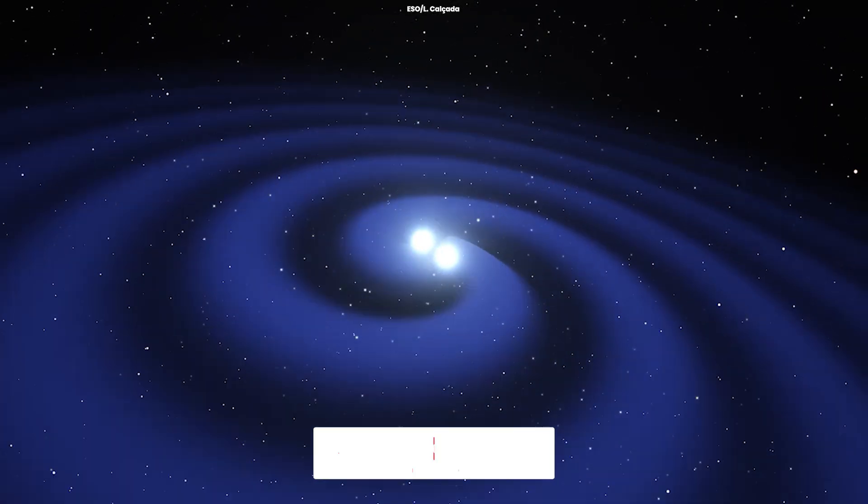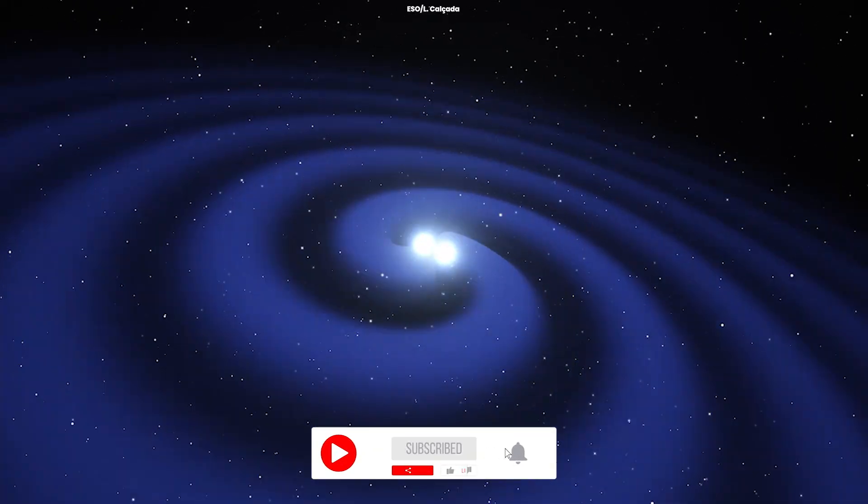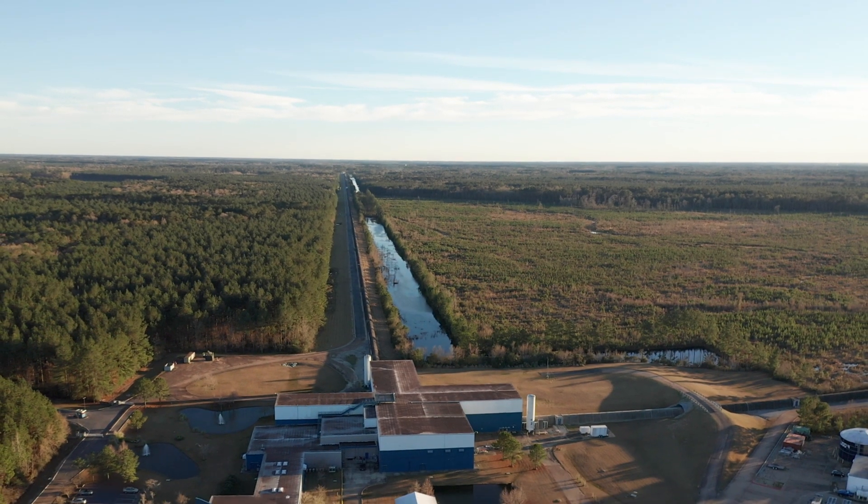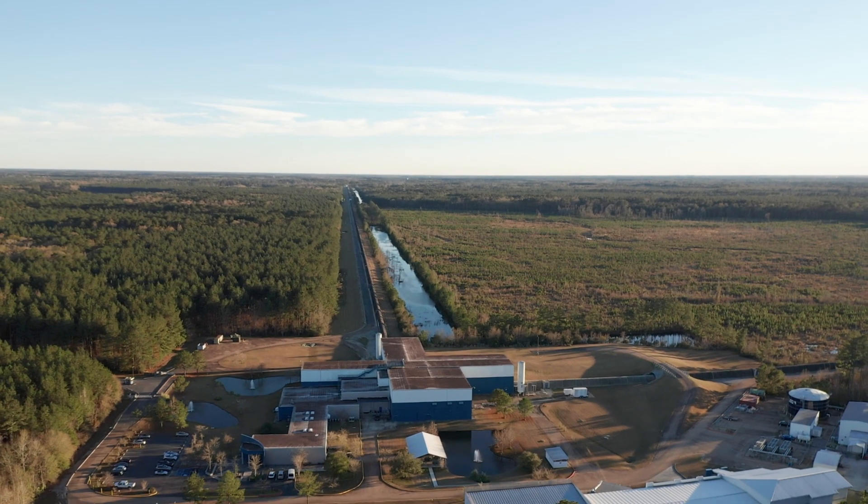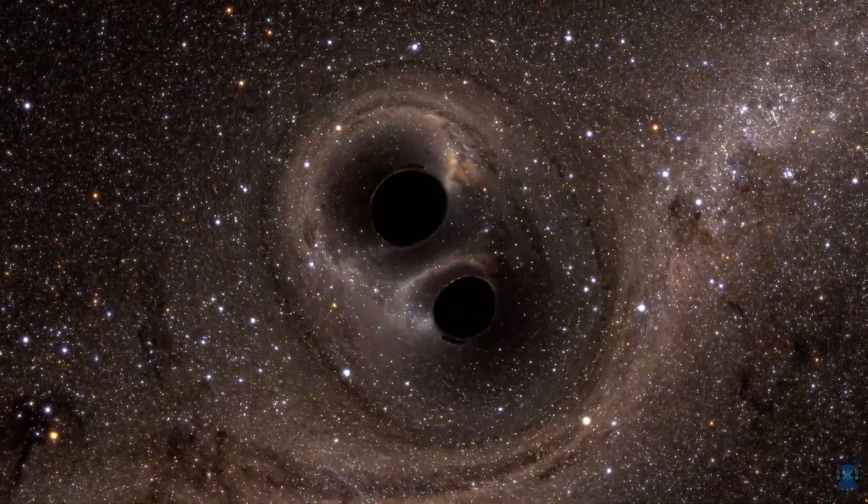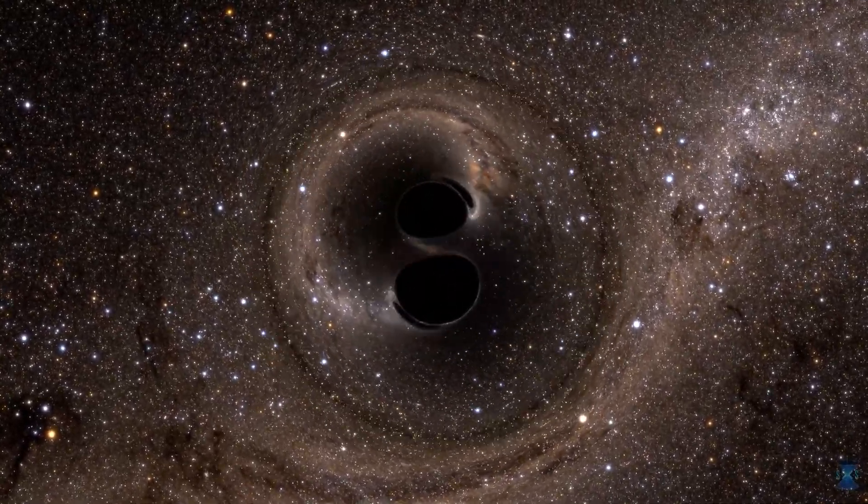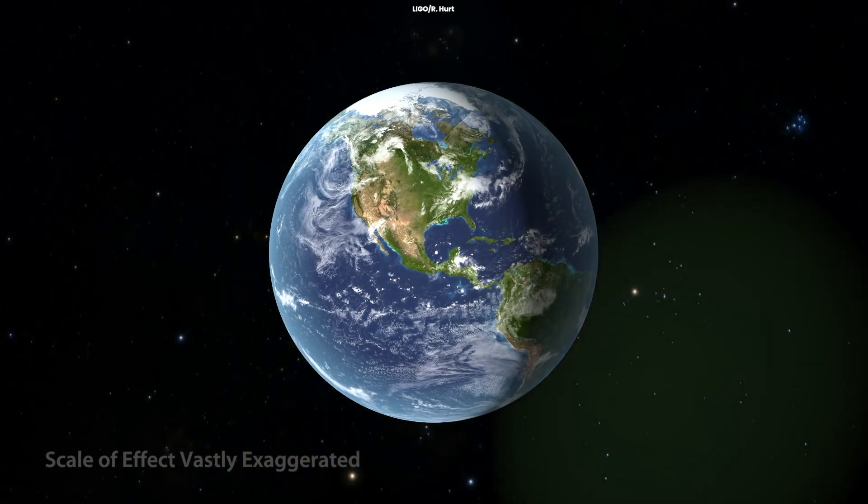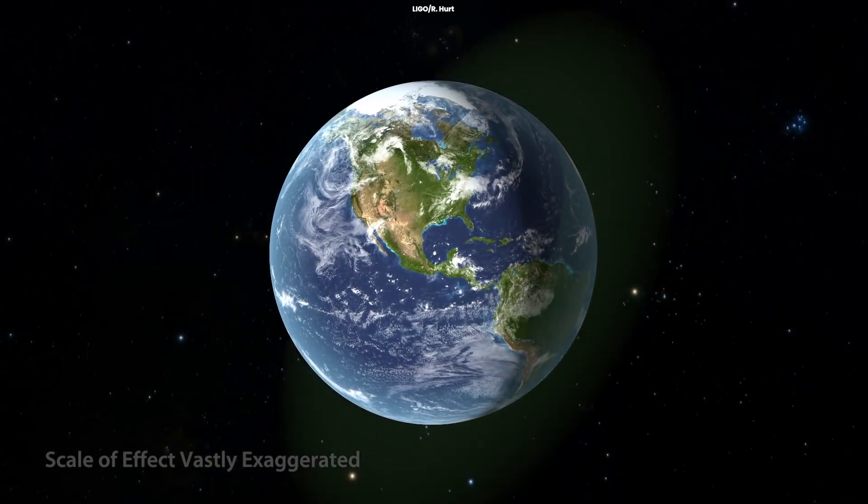Gravitational waves are extremely hard to detect because they're very far away, and by the time they reach us, they get weaker. The first time we officially detected such waves was in 2015, when the LIGO Observatory detected waves coming from two black holes crashing into each other about 1.3 billion years ago. So it took 1.3 billion years for these waves to reach us.